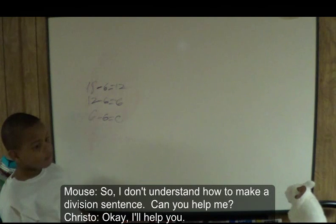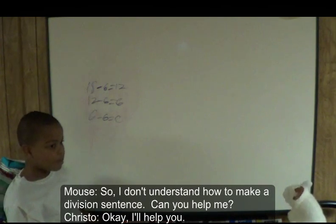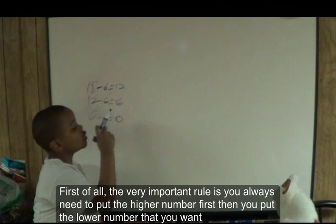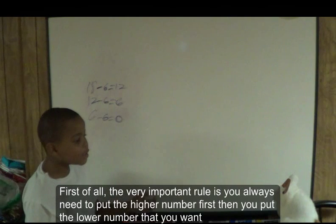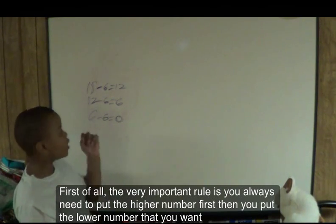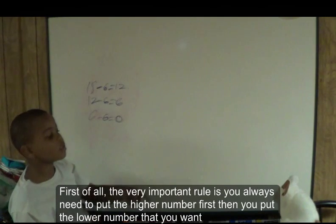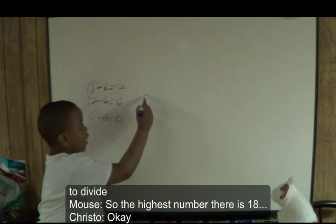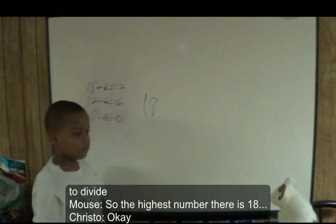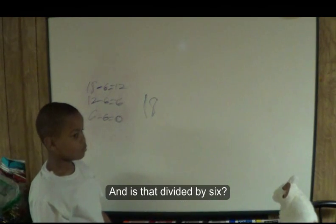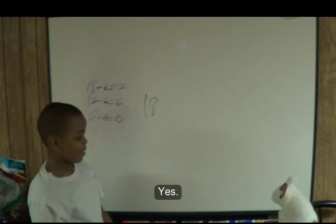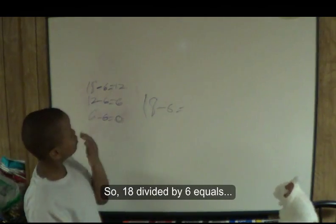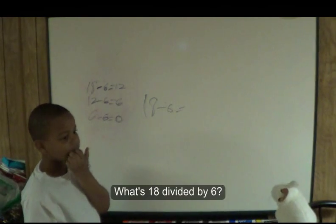So, I don't understand how to make a division sentence. Can you help me? Okay, I'll help you. First of all, the very important rule is you always need to put the higher number first. Then, you put the lower number that you want to divide. So, the highest number there is eighteen. And, is that divided by six? Yes. Okay. So, eighteen divided by six equals... what's eighteen divided by six?